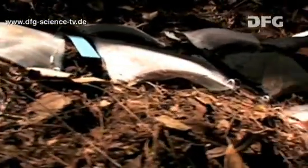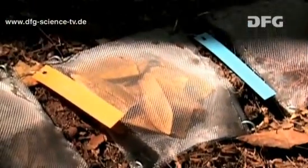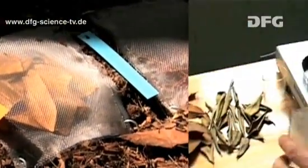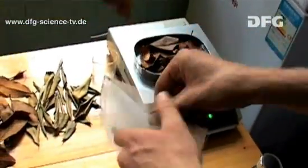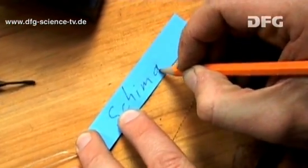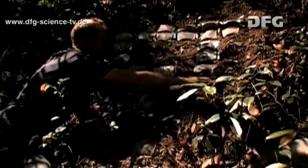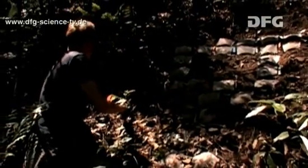Using these litter traps, they can calculate how much carbon and nitrogen from the trees and shrubs makes it back into the soil. The members of the team fill almost 1,000 litter bags containing leaves of one or more species. Then they spread them on the forest floor.